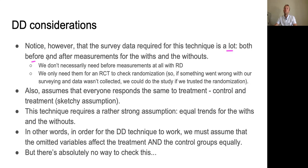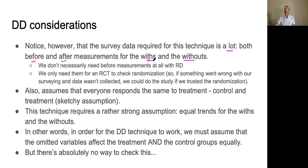Notice however that the survey data required for this technique is a lot. You need both before and after measurements for withs and withouts. It's often easy to get survey data for withs because the government almost always has data on the people before and after they started the program. But what they don't have is data on random other people before the program started and after it started — you need this to track how they would have changed in the absence of treatment. In regression discontinuity, you don't technically need a baseline measurement at all.